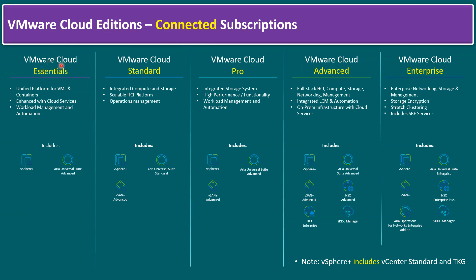Within the connected subscription, Essential is the modern workload platform — it comes with vSphere Plus and Aria Universal Suite Advanced. The 'plus' designation means it is completely a SaaS-based model, software as a service — not perpetual, but subscription-based cloud only.